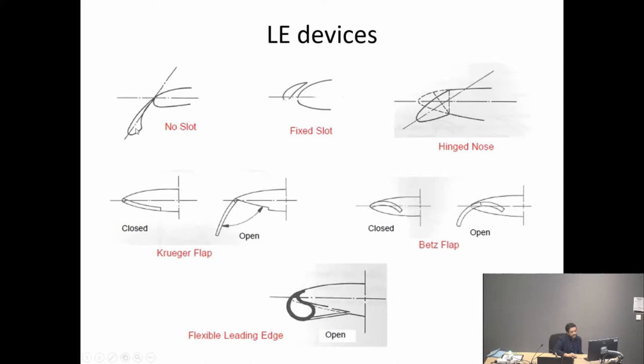Some aircraft have a leading edge slot with no slot, or with a fixed slot. Fixed designs are typical of low-speed or smaller aircraft — quite simple because they don't move. Many designs are hinged flaps, such as a hinged nose flap. For example, the Kruger flap in the open position extends down and forward from underneath the wing, and in the closed position it folds back underneath.